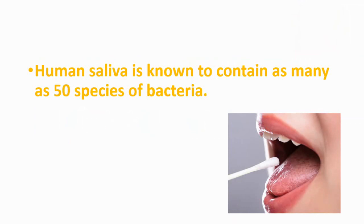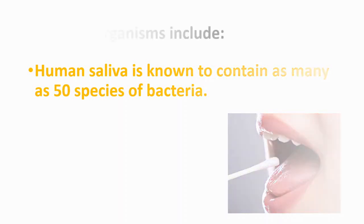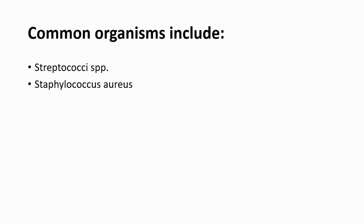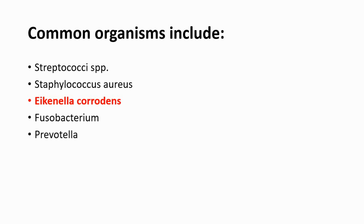Human saliva is known to contain as many as 50 species of bacteria. The common organisms are Streptococcus, Staphylococcus aureus, Eikenella corrodens — which we'll be talking about as it's an important bacteria related to human bites — Fusobacterium, and lastly Prevotella.